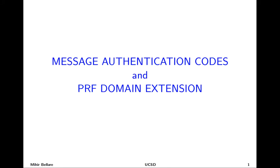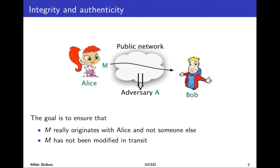We're now moving on to primitives that allow us to guarantee that data being sent is authentic, or to guarantee its integrity — that it hasn't been modified — which is a big application area. The primitive we're going to use is called a message authentication code. Alice and Bob are communicating, but the medium is insecure: there's an adversary that can see and possibly modify information sent across.